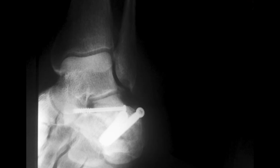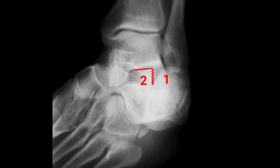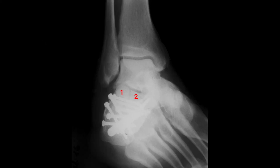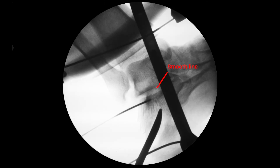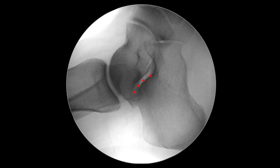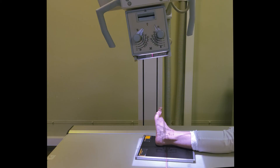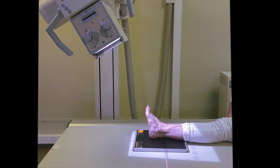The main structure seen at a well-done Broden's view is the subtalar joint. This view allows estimation of the number of articular fragments and the degree of their displacement. These projections are extremely useful during the surgical reduction of the calcaneus. Projections made at different angles are necessary to estimate articular surface reduction at every point of its curvature.